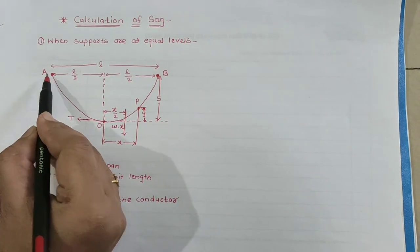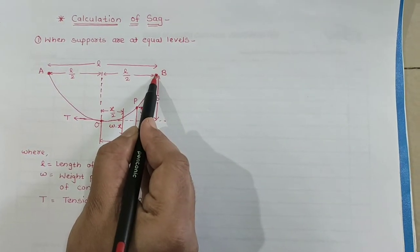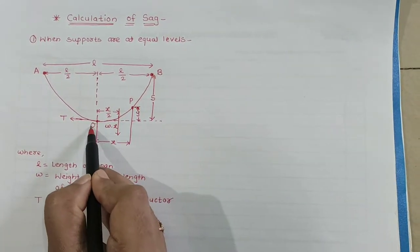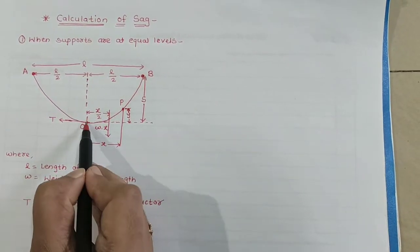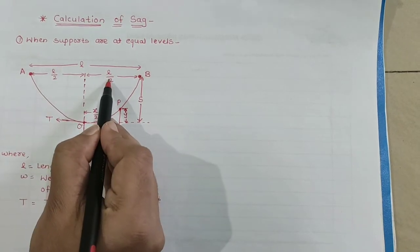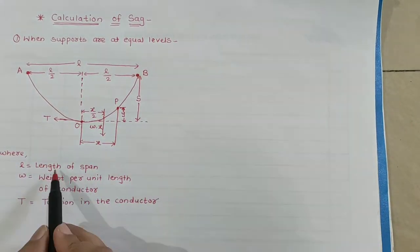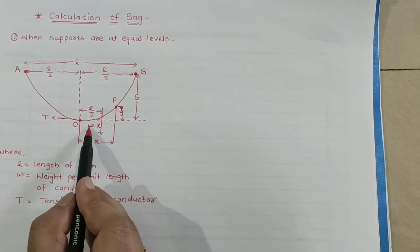Consider a conductor between two equi-level supports A and B with O as the lowest point. Lowest point will be at the mid-span. Here L is length of span, W is weight per unit length of conductor, and T is the tension in the conductor.